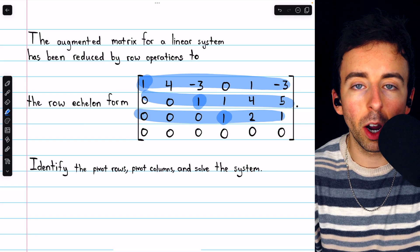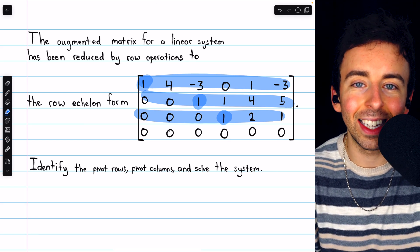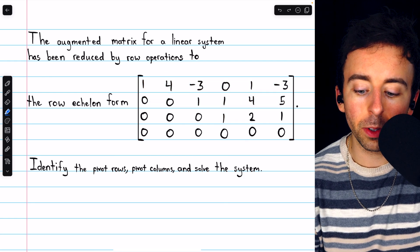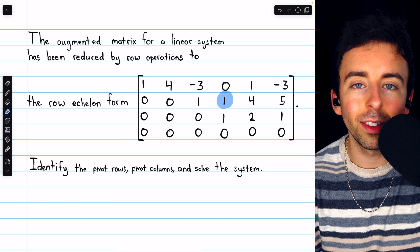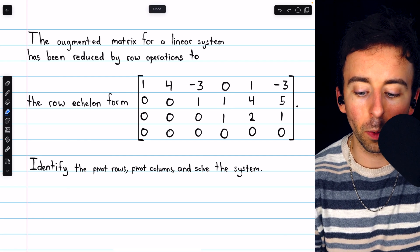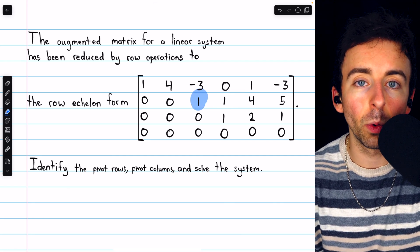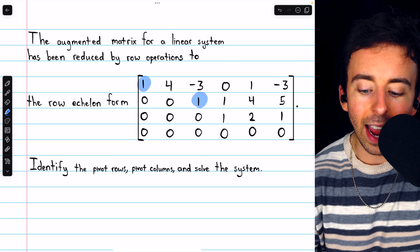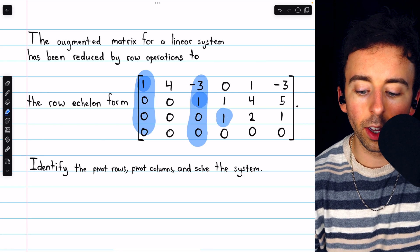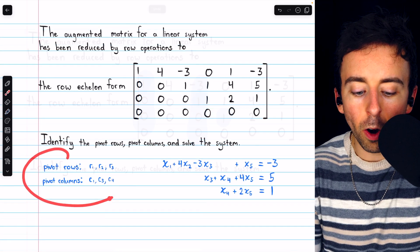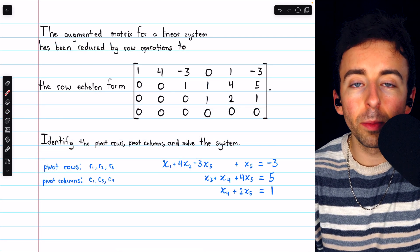Row 4 is not a pivot row because it doesn't contain a leading one. As another non-example, notice that this is not a leading one because it's not the first non-zero entry in its row, whereas this is the leading one. Again, the columns containing those leading ones are the pivot columns, columns 1, 3, and 4 in this case. So those are our pivot rows and pivot columns.